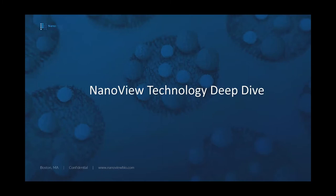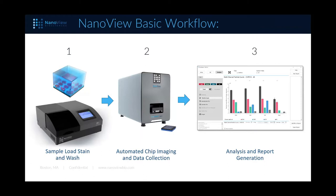Let's focus on what the workflow looks like. You can easily run up to 24 samples in a single sample load, stain, and wash. Step one: 24 samples can go into that process all at once — we'll see exactly how you load them onto our immuno-capture chips in the next few slides. After processing, which is a largely hands-off process, it does most of the work for you.